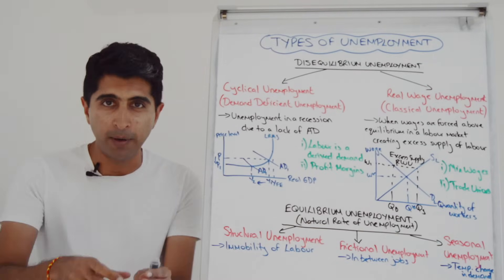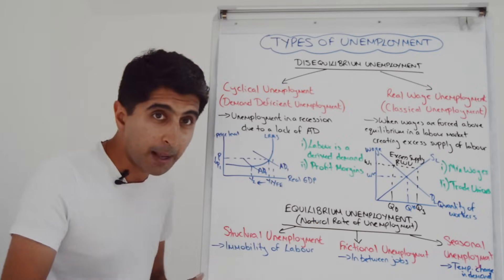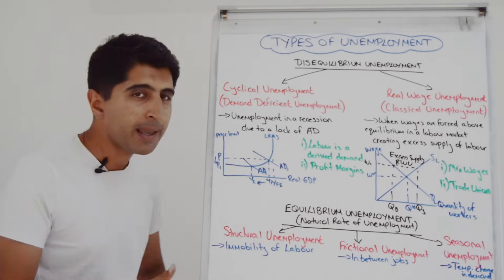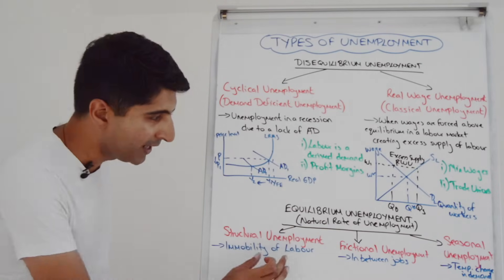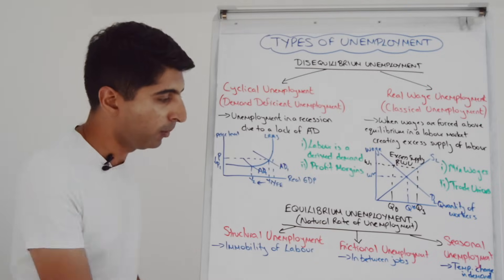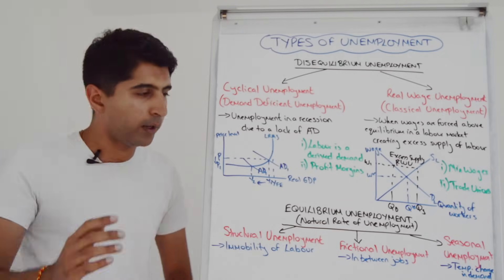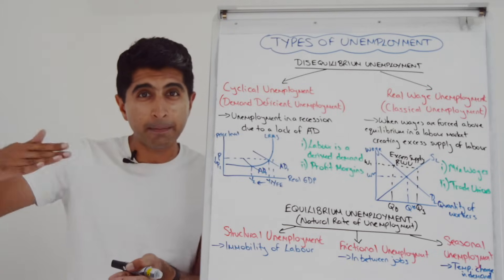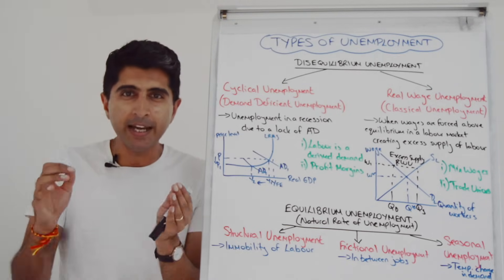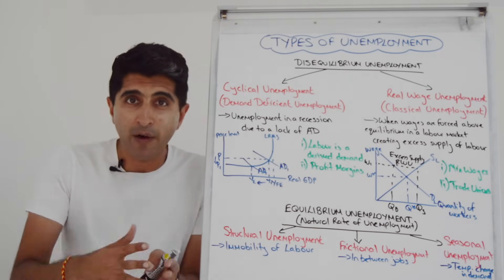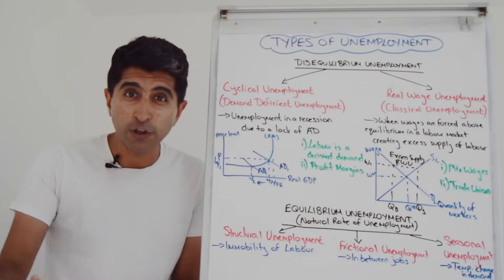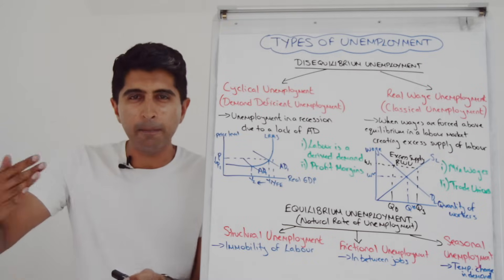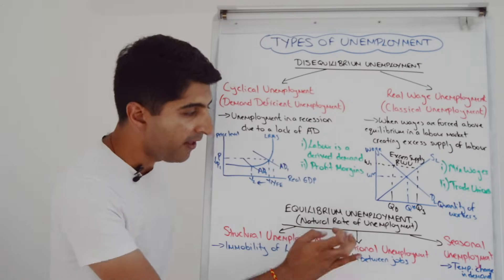There are three types of unemployment within the natural rate of unemployment — three types that occur at equilibrium in a labour market. First, you have structural unemployment, which is simply the immobility of labour. You also have frictional unemployment — this is when workers are in between jobs. Maybe a worker has voluntarily quit their existing job looking for something better; the period of time they're searching for something better, they're frictionally unemployed. Or maybe workers are already out of work and they're rejecting existing jobs, hoping something even better will come along. The point is you're doing that voluntarily — that's frictional unemployment.